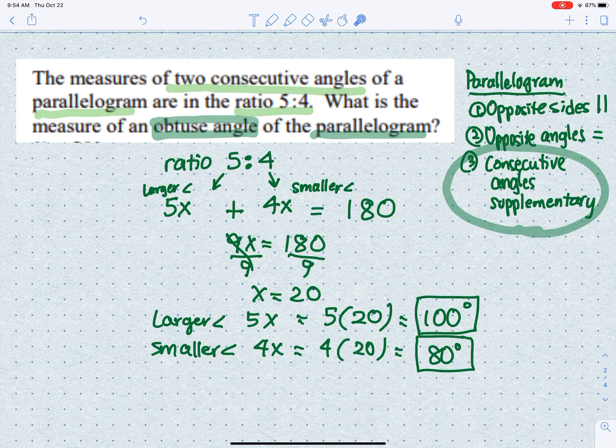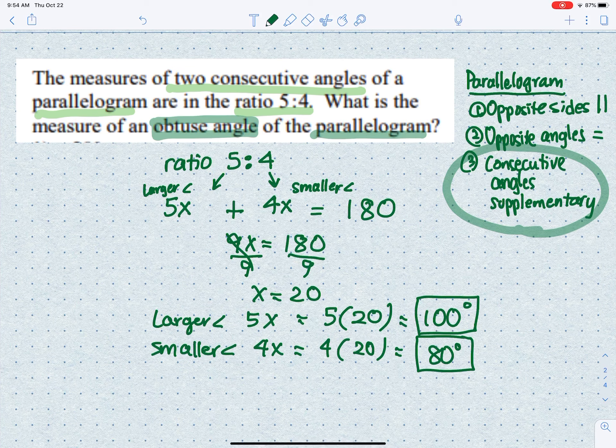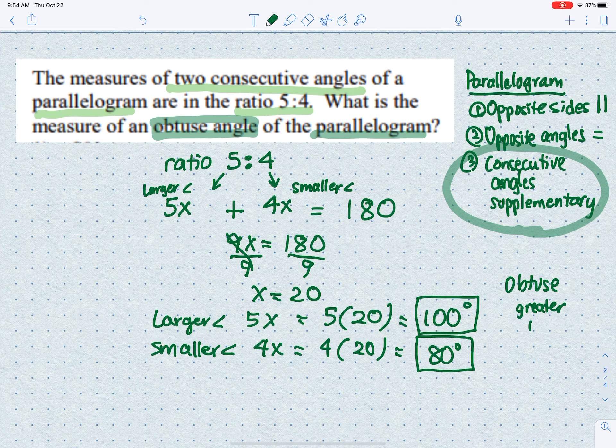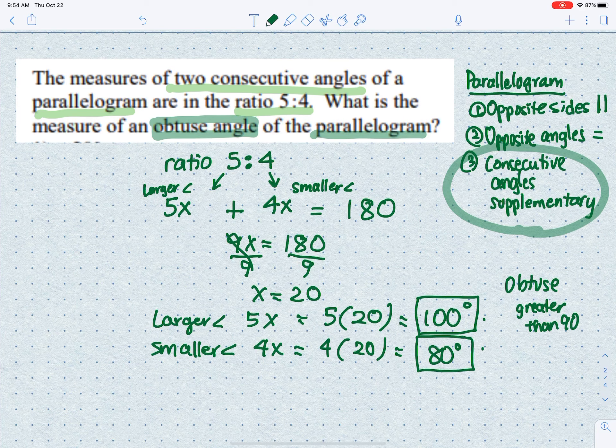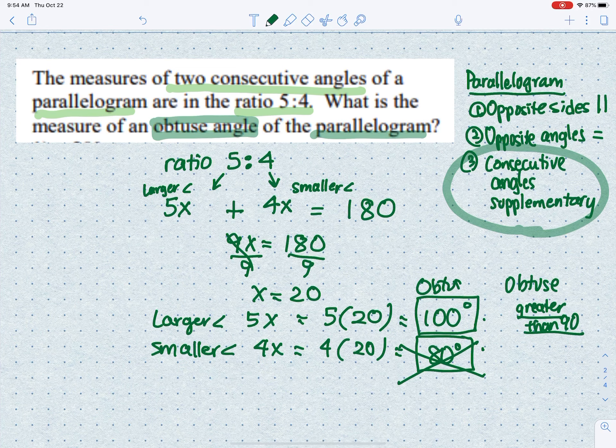Going back to the question, it asks for the obtuse angle. At the beginning of the year, we learned that an obtuse angle is greater than 90 degrees. Between the two angles, 100 degrees is greater than 90, so this is the obtuse angle.